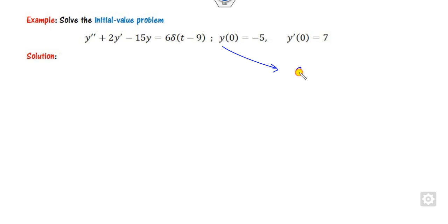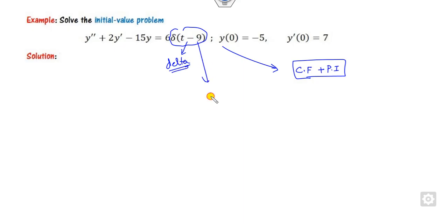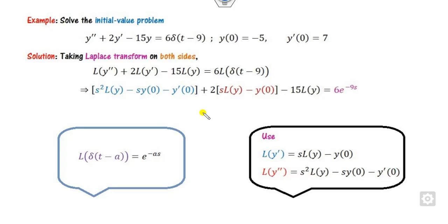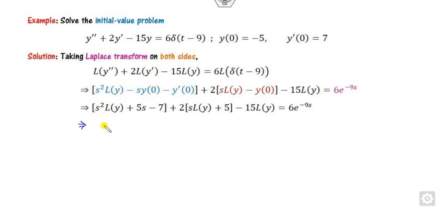The first example is a differential equation involving the delta function. You could solve this with the complementary function plus particular integral, but we will use the Laplace transformation. The right-hand side contains a delta function, so its Laplace transform is e^(minus 9s). Taking the Laplace on both sides: the Laplace of the second derivative is s²·L{y} minus s·y(0) minus y'(0). Substituting the initial conditions — y(0) = minus 5, y'(0) = plus 7 — we get the working expression.